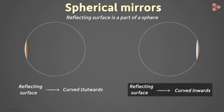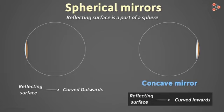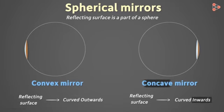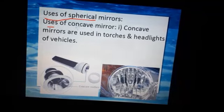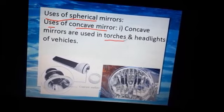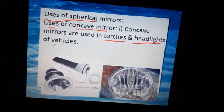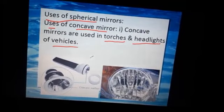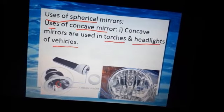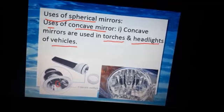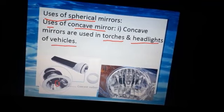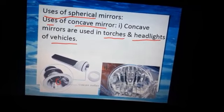Now the uses of spherical mirrors. First, uses of the concave mirror. The concave mirror is used in torches and headlights of vehicles — that may be cars, two-wheelers, or four-wheelers. The second point: the concave mirror is used by dentists to see an enlarged image of teeth.